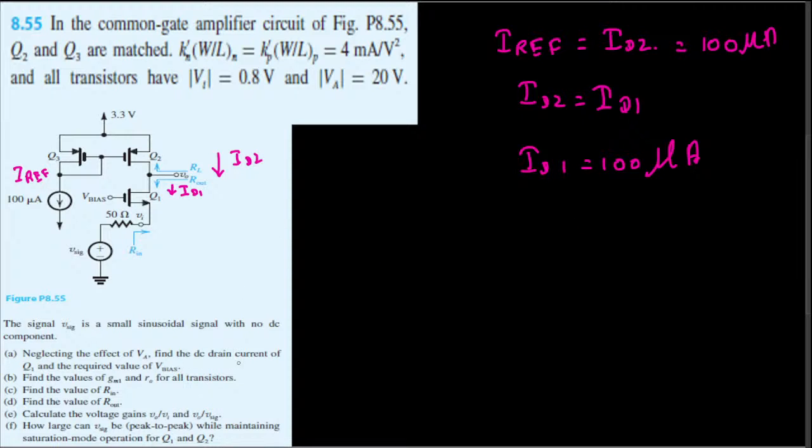That's the drain current value. Then the next question is asking for the drain current of Q1 and the required value of V_bias. If you notice, the V_bias is right here—this voltage right here, the gate voltage of Q1. So we have to find this one out.